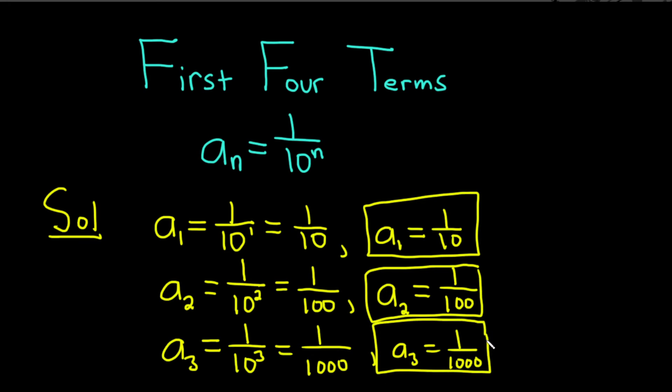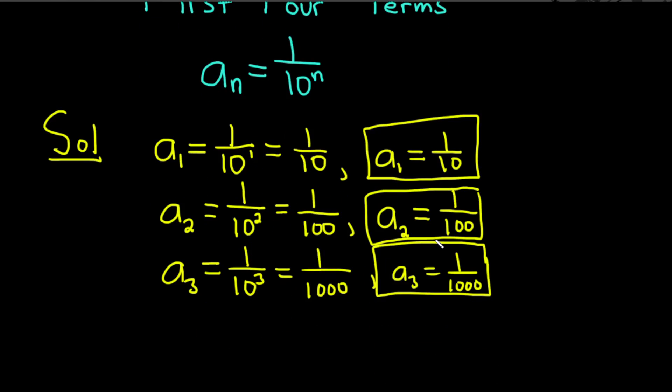And the last term we want to find is the fourth term. So a sub four, this would be one over ten to the four, which is one over ten thousand. So a sub four would be equal to one over ten thousand. And that would be the fourth term of the sequence.